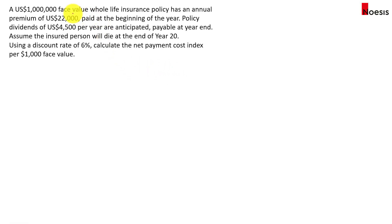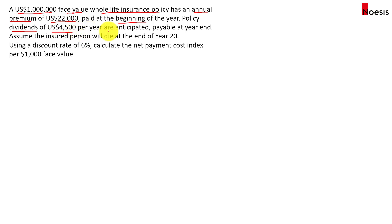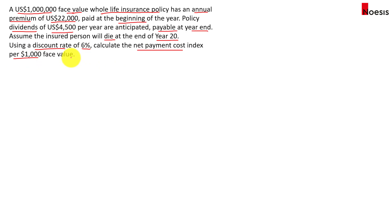Now let's look at this example: a $1,000,000 face value whole life insurance policy with an annual premium of $22,000 paid at the beginning of the year. The policy dividends are $4,500 per year, anticipated to be payable at year end. Assume the insured person will die at the end of year 20, and using a discount rate of 6%, calculate the net payment cost index per $1,000 face value.